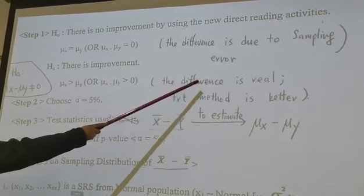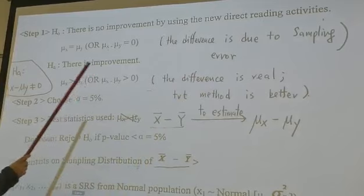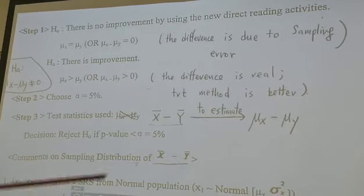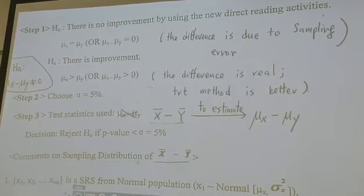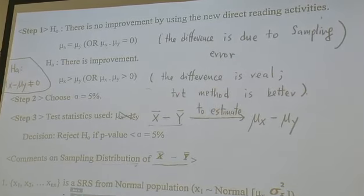So this one we say the difference is real. Why you see x̄ is bigger than ȳ? Because the treatment method is better. Because the new directed reading activity in the classroom helped people improve their reading ability.